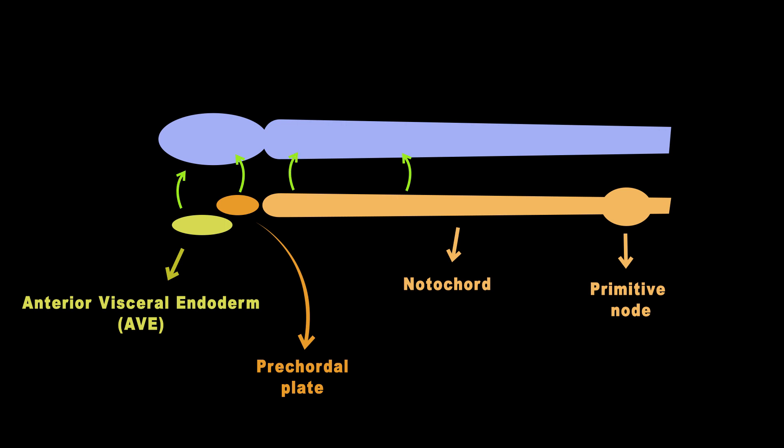In response to these signals, the anterior and posterior parts of the neural plate begin expressing specific genes such as OTX2, which is associated with the future forebrain and midbrain, and GBX2, which is related to the hindbrain and spinal cord.